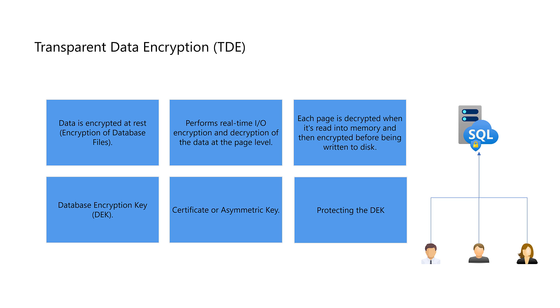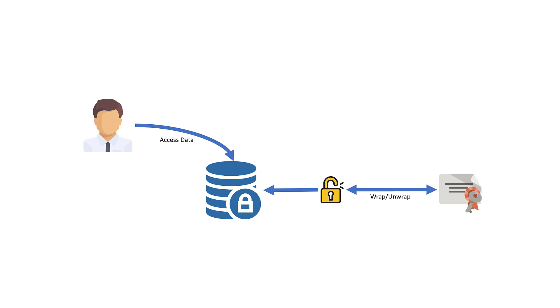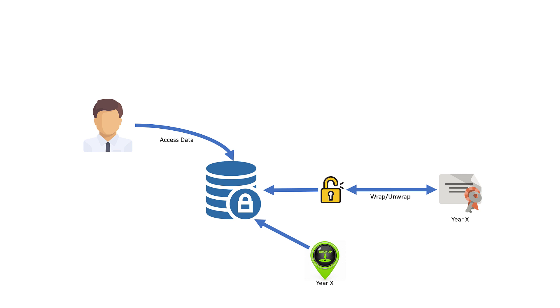Now that we understand the fundamentals of transparent data encryption in SQL Server, let's delve into how TDE operates. When a user attempts to access a SQL Server database with TDE, SQL Server retrieves the necessary key to access the database files and returns the data to the user. In another scenario, when restoring a database from a backup, SQL Server requires the exact key used to encrypt the backup to successfully restore the database. SQL Server must have access to the correct key in both cases.